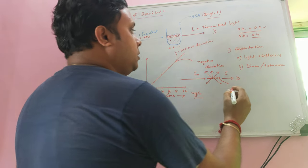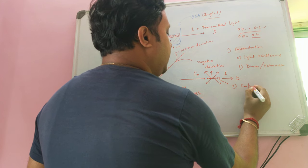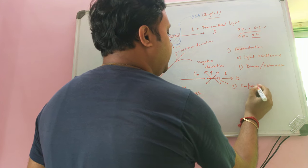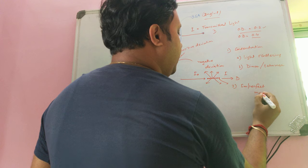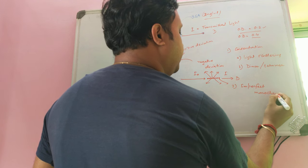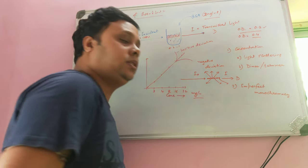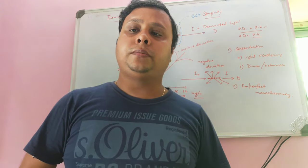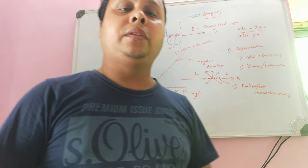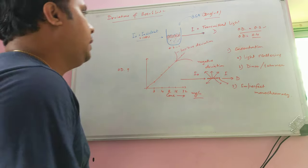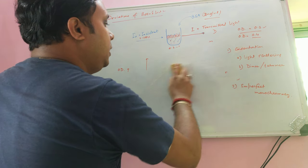The second deviation of Beer's Law is imperfect monochromacy. Beer's Law is applicable to monochromatic light only — meaning the incident light must be a single specific wavelength.